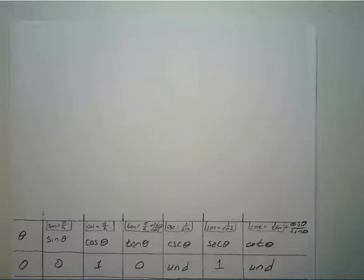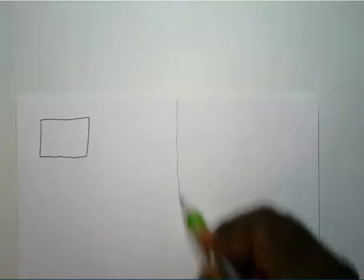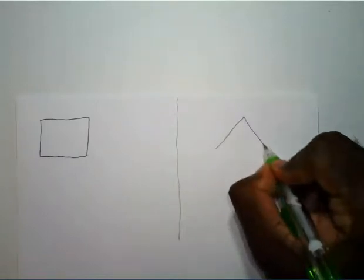Now here comes the fun part — you don't have to memorize all of these, I'm going to show you a trick. We're going to start off with a square and draw a little line to separate it, then we'll draw a triangle.